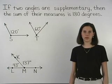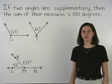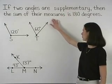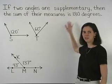The definition of supplementary angles states that if two angles are supplementary, then the sum of their measures is 180 degrees.